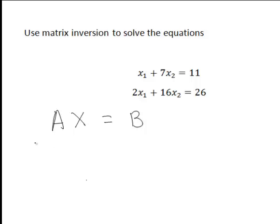So matrix A on the left is actually the coefficients of our unknowns x1 and x2. So in the first equation we have 1x1 plus 7x2. The second equation is 2x1 plus 16x2. Hence here this is the matrix A.